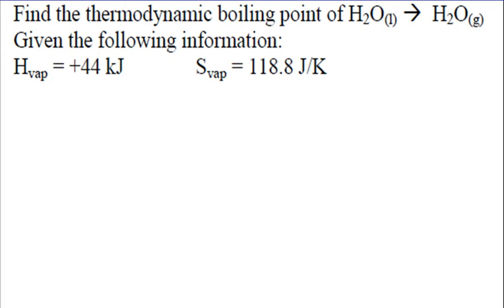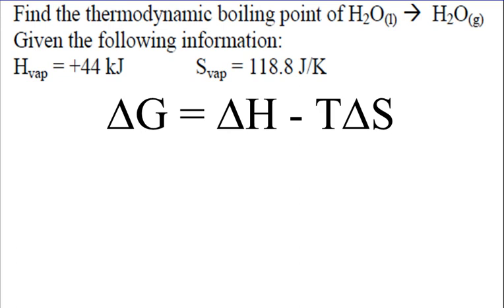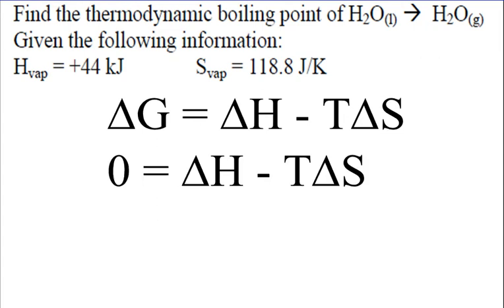So the Gibbs' equation is delta G equals delta H minus T times delta S. So let's go ahead and put that on here. And we're at equilibrium because we're going through this phase change, so delta G is going to equal zero. We're given delta H and delta S, we're looking for temperature. So if we rearrange this equation so that we have T equals something, let's go ahead and do that.